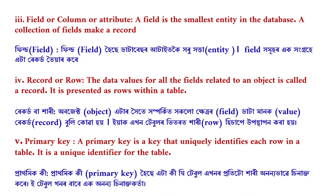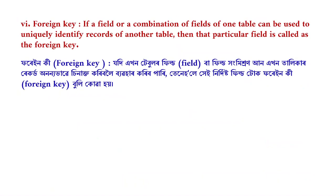A Primary Key is a unique identifier for the table. Primary key values must be unique — no duplicate values are allowed. Examples include student roll number and employee code. Next, Roman 6: Foreign Key. If a field or a combination of fields of one table can be used to uniquely identify records of another table, then that particular field is called the Foreign Key.